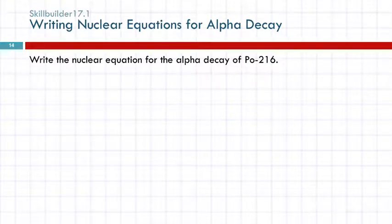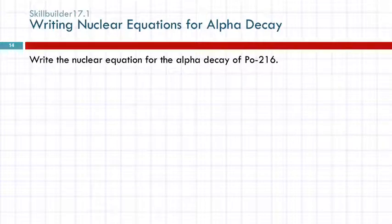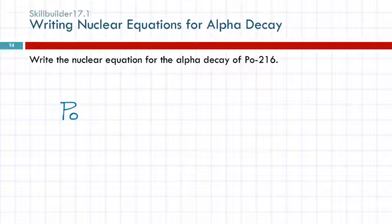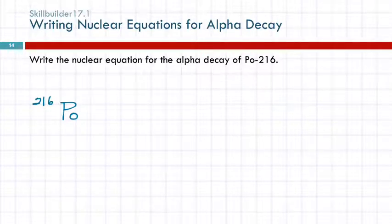Write the nuclear equation for the alpha decay of Po-216. We've got Po; 216 is the mass number and goes on the upper left. We look up the atomic number on the periodic table: Po is 84. Po is polonium — one of the elements that Marie Curie discovered.